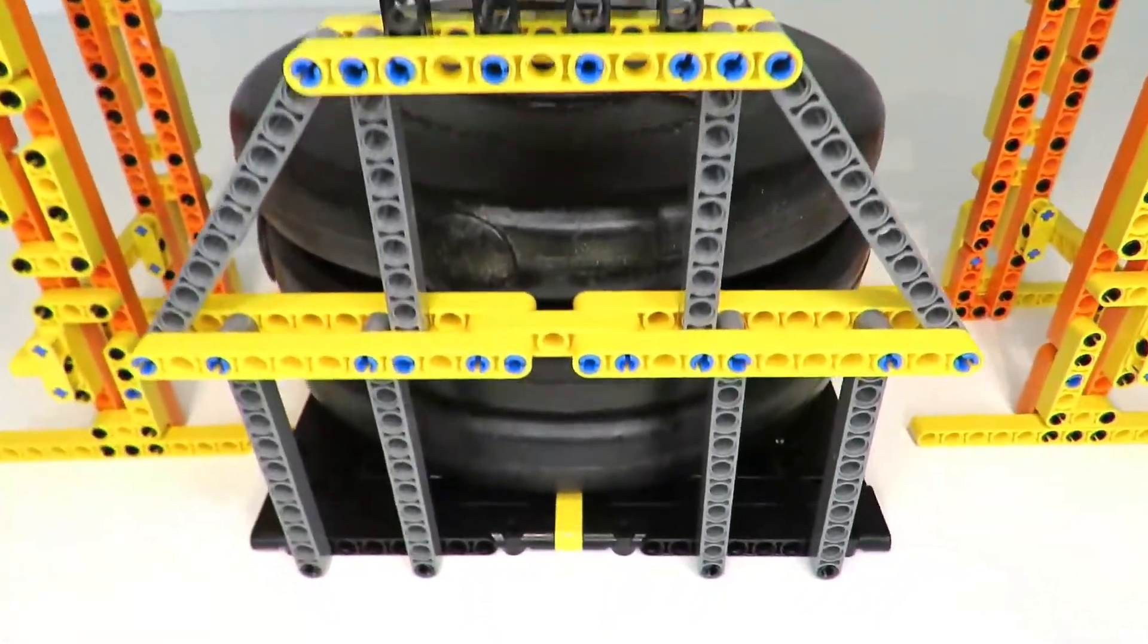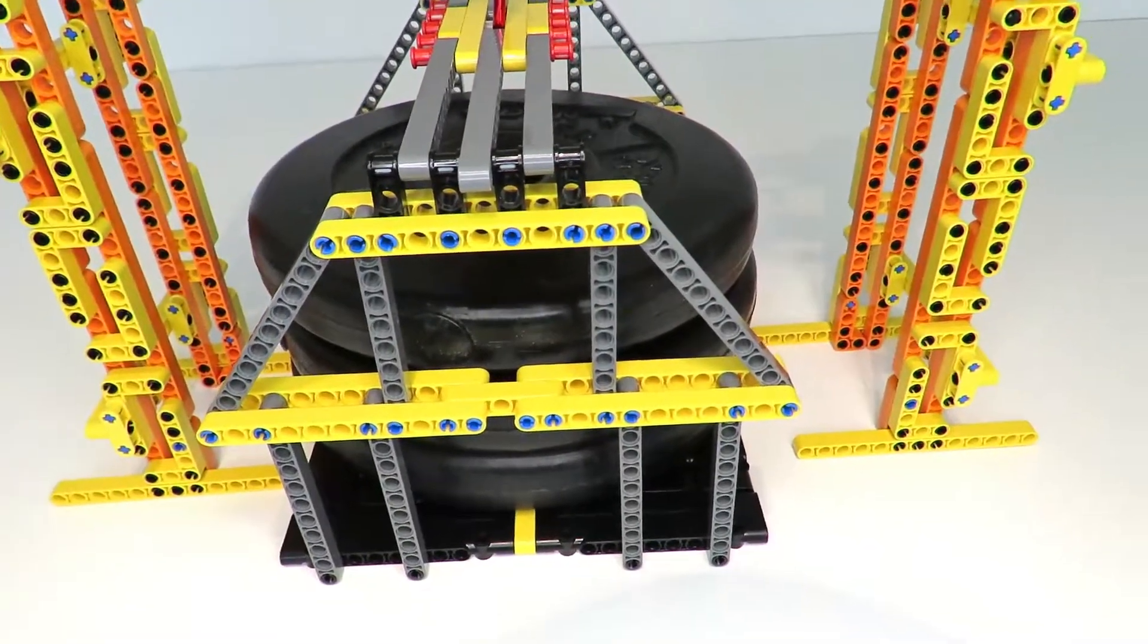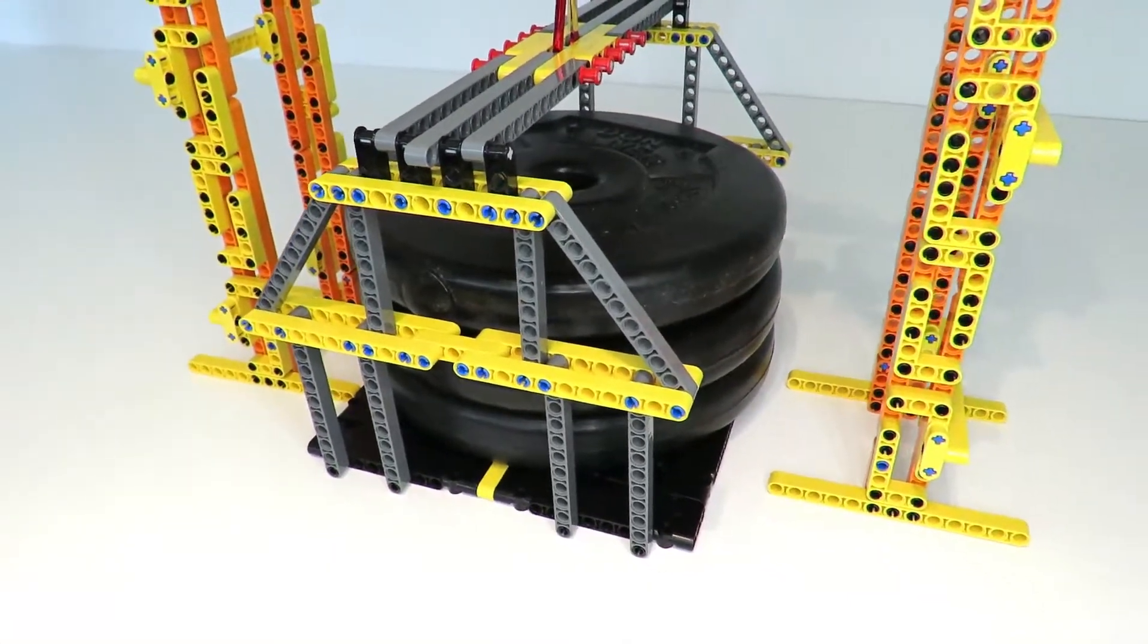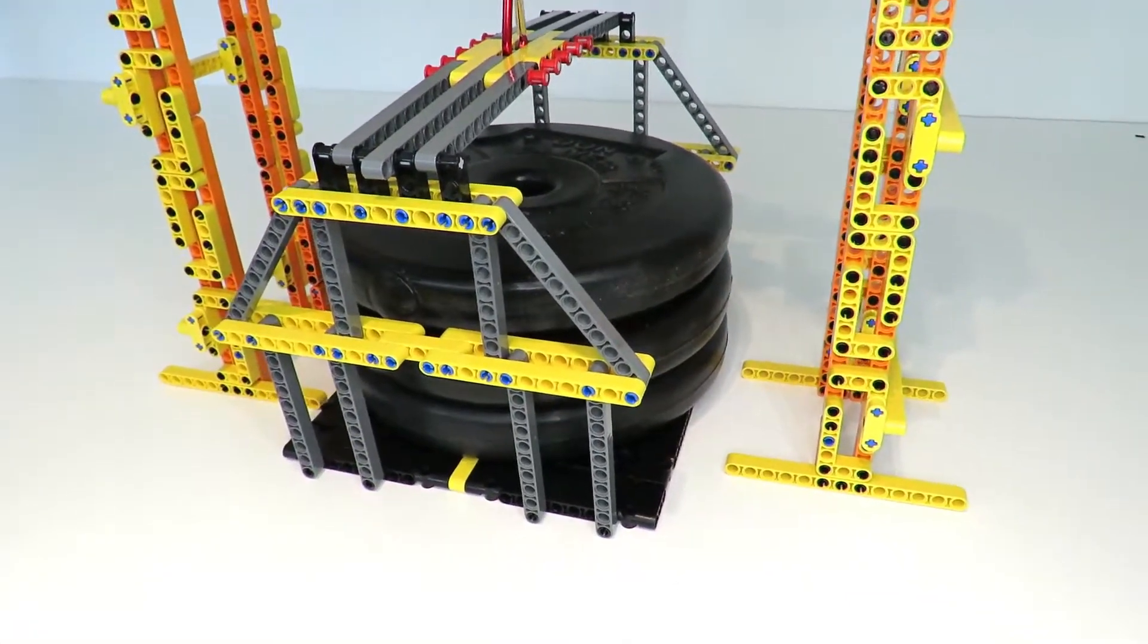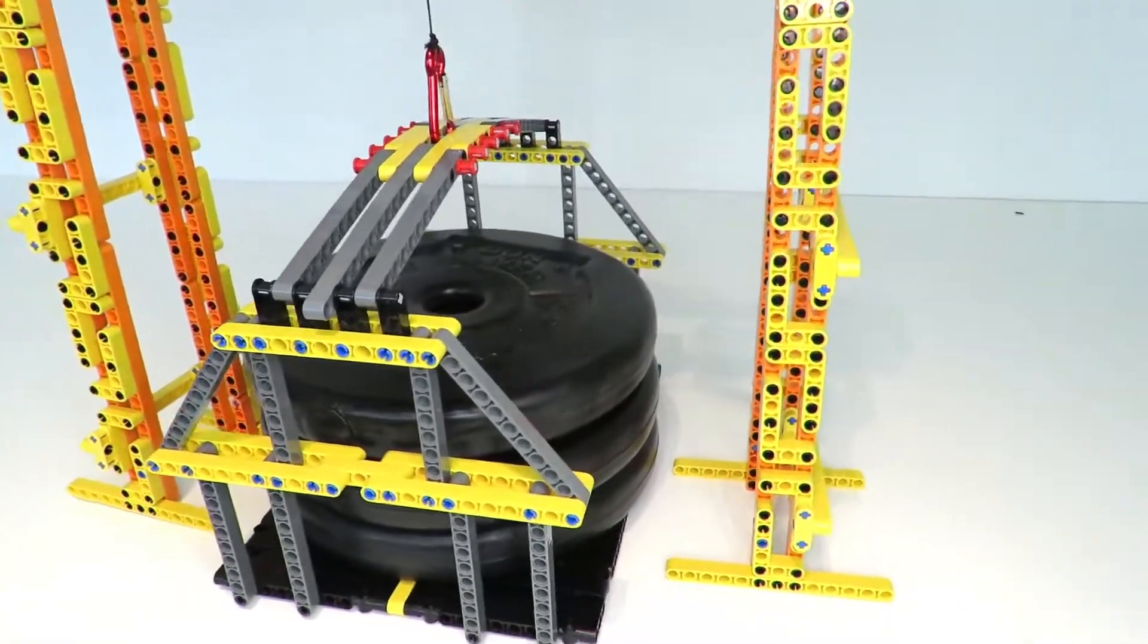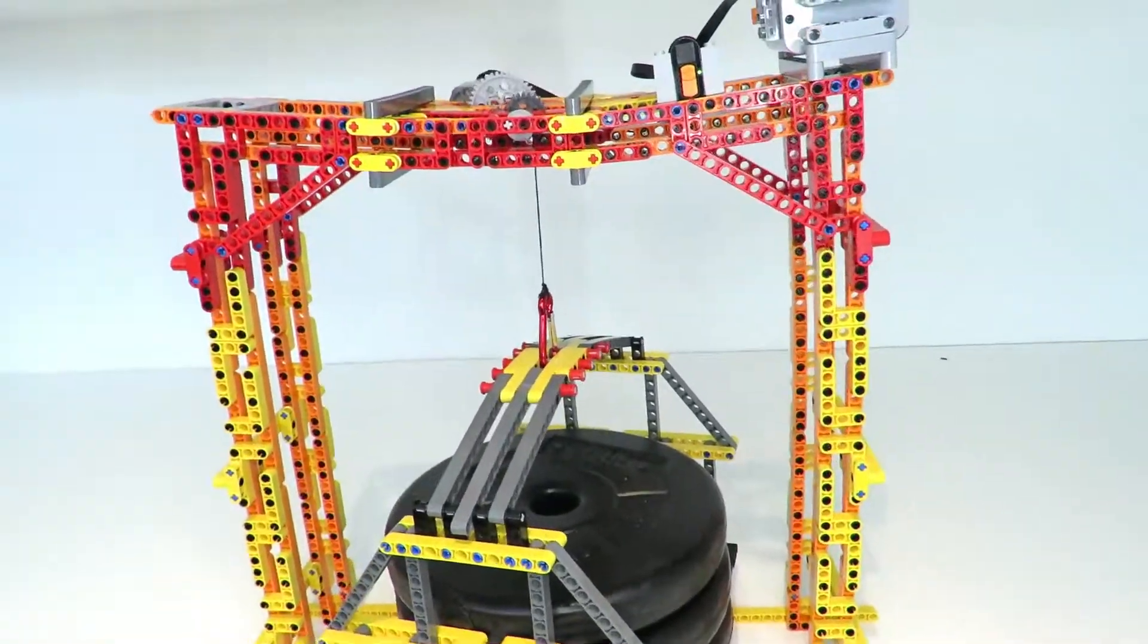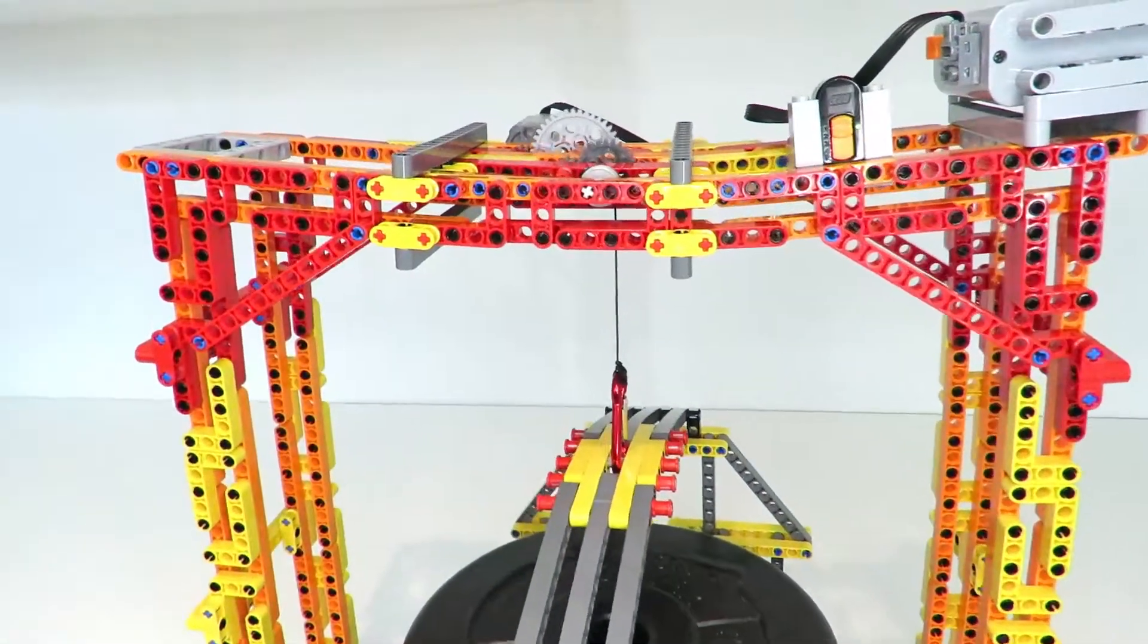I've put on seven and a half kilograms at the bottom. The previous crane could manage six. Let's see if we can lift seven and a half. As you can hear it's straining, the cross beam is starting to bend, but it is lifting.